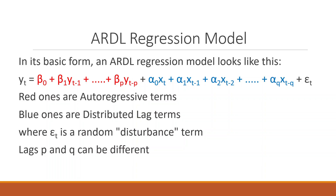In its basic form, the ARDL regression model is given below. The red terms are the autoregressive terms — that is, lags of the dependent variable — while the blue ones are the distributed lags of another independent variable. Epsilon t is a random disturbance term. Lag p is for the dependent variable and lag q is for the independent variable, and they can be different.